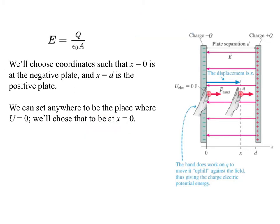We're going to choose our coordinate system such that X equals zero is on the negative plate and X equals D is on the positive plate. And then we can set our potential energy to be zero anywhere we want. We can always choose the zero point for potential energy at least once in the problem. We're going to choose it at X equals zero.